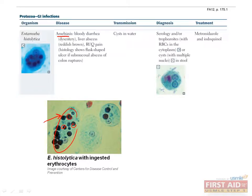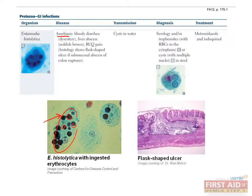Entamoeba can also cause single or multiple abscesses in the liver by penetrating into portal vessels and entering the liver. The abscess is filled with acellular, proteinaceous debris which has a reddish-brown appearance, often likened to anchovy paste. Entamoeba can also produce ulcers in the colon. These ulcers are described as having a flask shape because of a narrow neck and broad base, which you can see in this image here.